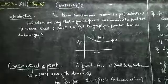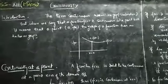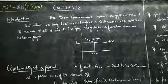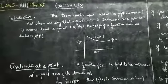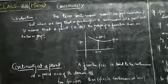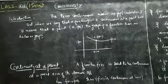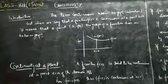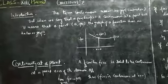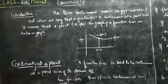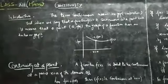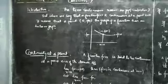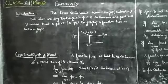When we say that a function f(x) is continuous at a point x equal to a, it means that at point a, the graph of the function has no hole or gap. You can see in the figure. Next topic: continuity at a point.